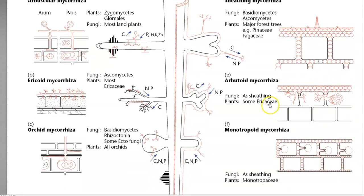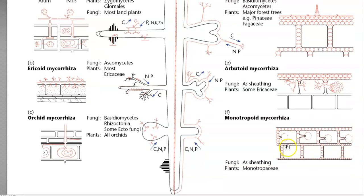Ericoid mycorrhiza commonly colonizes plants in the Ericaceae family, and the fungi involved belong to Ascomycetes. Orchidaceous mycorrhiza mainly belongs to Basidiomycetes and Rhizoctonia, colonizing orchid plants. The arbutoid mycorrhiza is another sheathing group that mainly colonizes ericaceous plants with the same nutritional relationship. The final sheathing mycorrhiza is monotropoid mycorrhiza, which mainly colonizes plants in the Monotropaceae family.